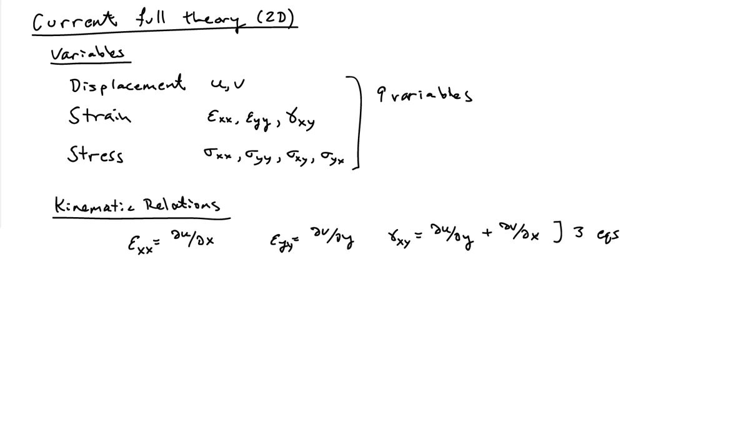In terms of equations, we have first the kinematic relationships. Those are the two expressions for the normal strains in terms of the displacements, and then the expression for the shear strains in terms of the displacements. So that gives us three equations.